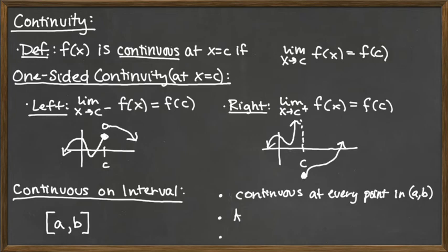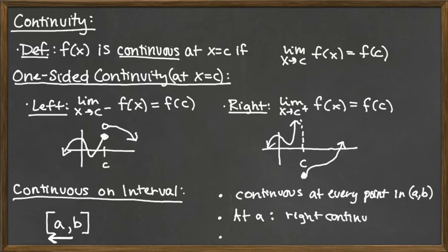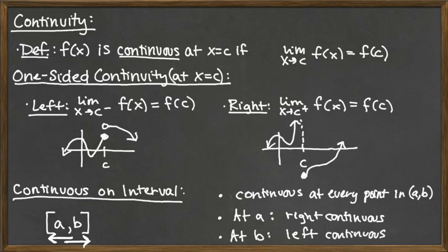At endpoint a, notice that a is the left-hand endpoint of the interval. We would be approaching a from the right-hand side to get to the left edge, so at a we need the function to be right-continuous. Similarly, at endpoint b, which is the right endpoint, as we approach it we're coming from the left, so it needs to be left-continuous at that right endpoint.